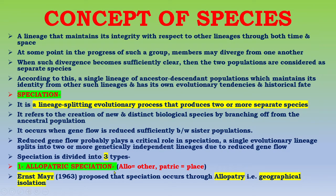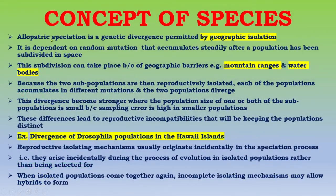The first type is allopatric speciation. 'Allo' means other and 'patric' means place. This was described by Ernst Mayr in 1963, who proposed that speciation occurs through allopatry, that is, geographical isolation. Allopatric speciation is genetic divergence permitted by geographic isolation. It is dependent on random mutations that accumulate steadily after a population has been subdivided in space.